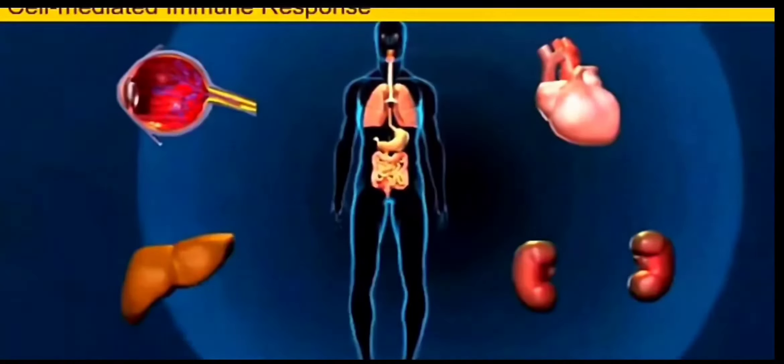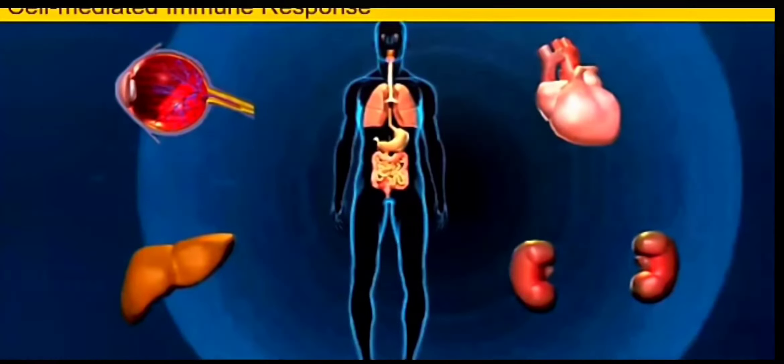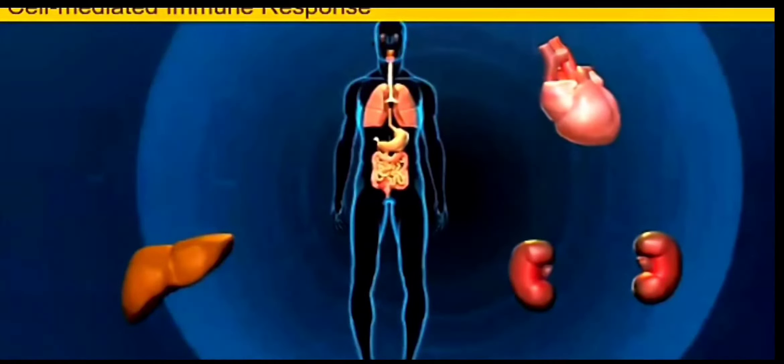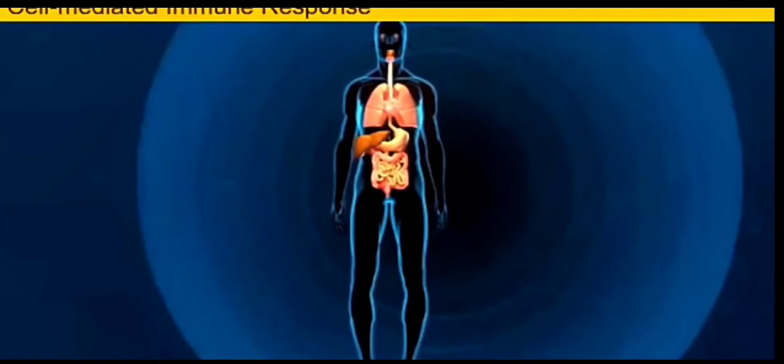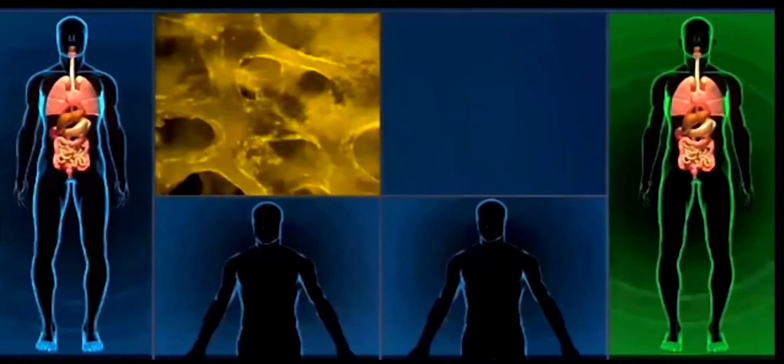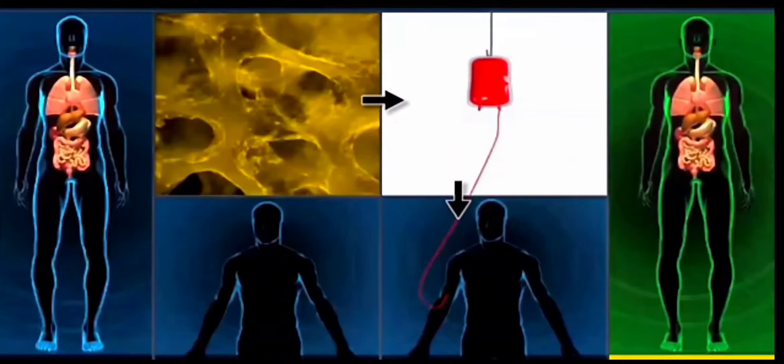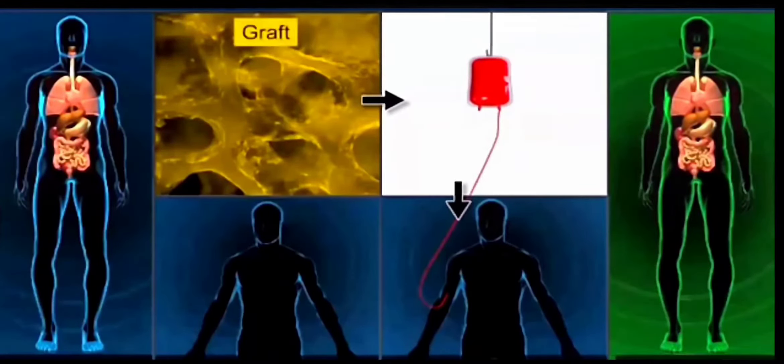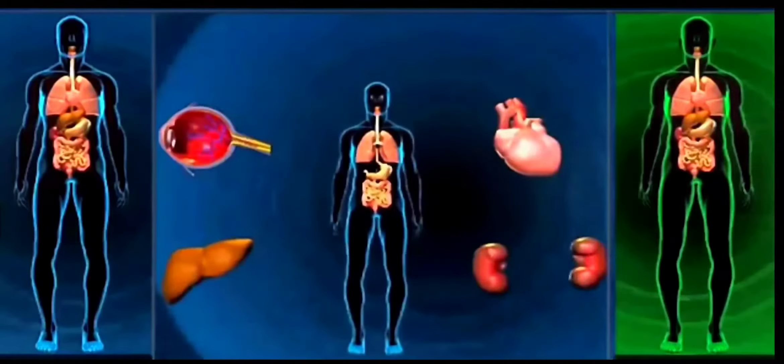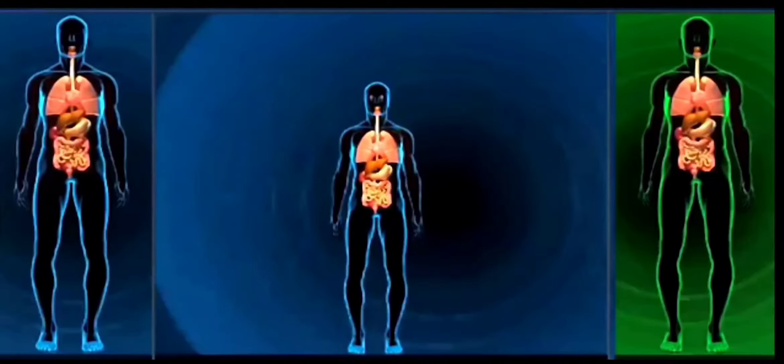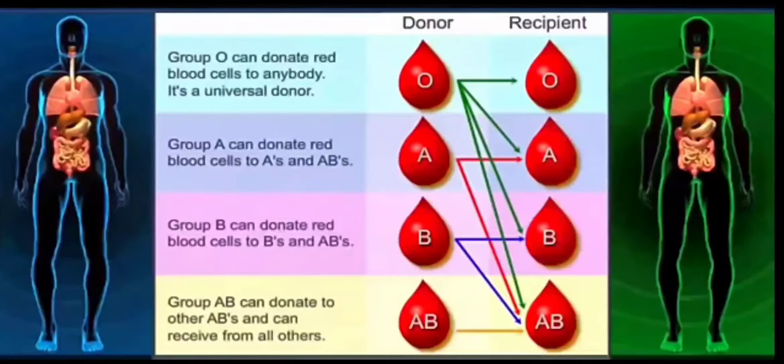Then comes the cell mediated immunity, CMI. In this type, there are different types of organs. Let me explain how this occurs actually. Suppose if we go for some kind of organ replacement - our body will not accept any type of organ. First of all, we'll have to match the blood group as well as the tissue, because otherwise the body will reject that organ. So there is a must of matching the proper type of blood and tissue.